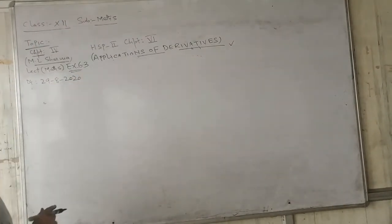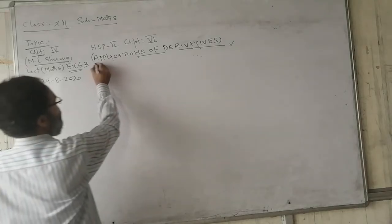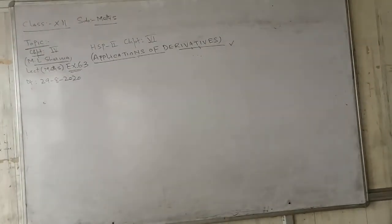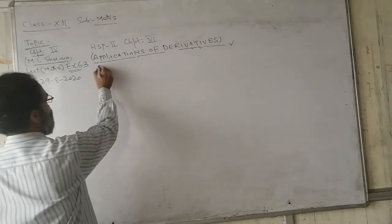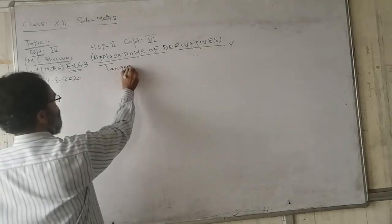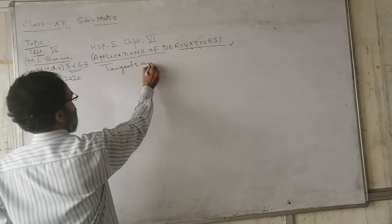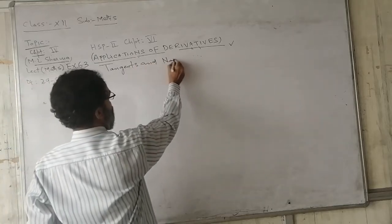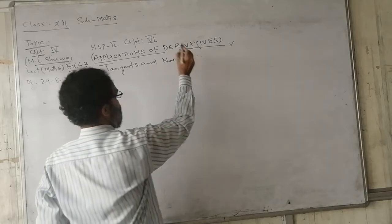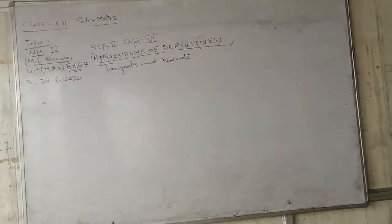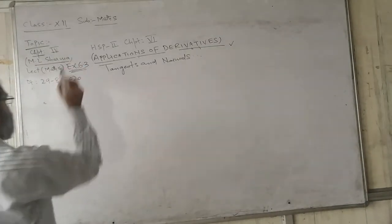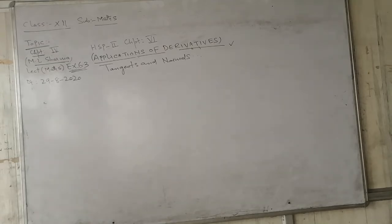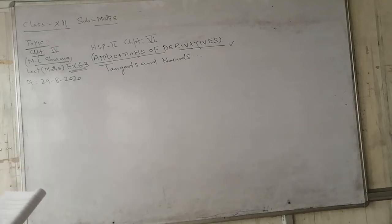Again, with the same topic — application of derivatives — we were solving questions on tangents and normals, that is, the equation of a tangent and equation of a normal. This was exercise 6.3. Some of the questions I had solved yesterday, so let us see the next questions.